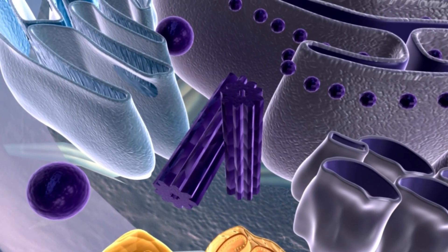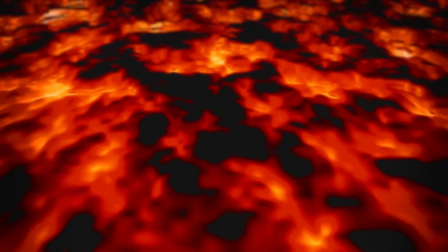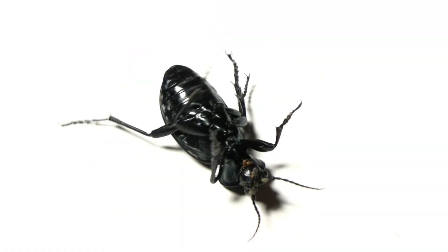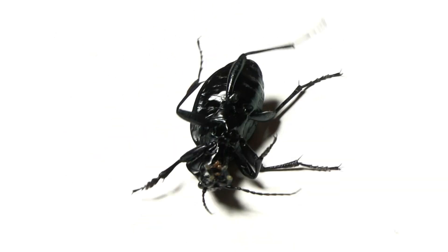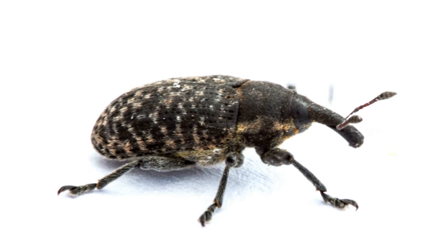One possible explanation for this event is that Betelgeuse may be entering a new, more unstable phase of its life. As stars of this size age, their outer layers can become increasingly unstable, leading to sudden and massive outbursts of energy.